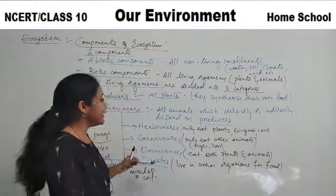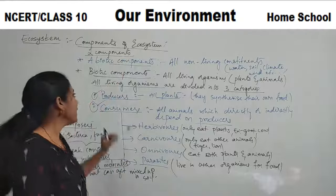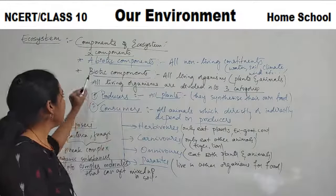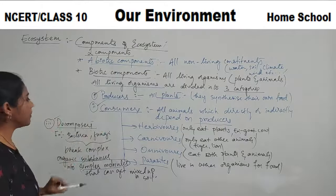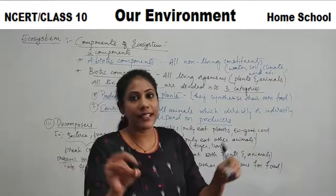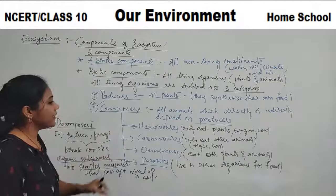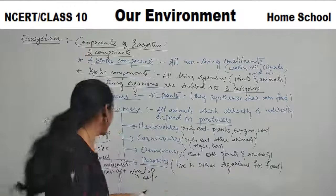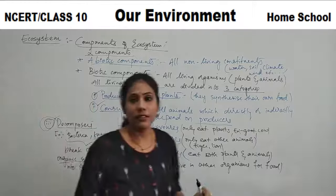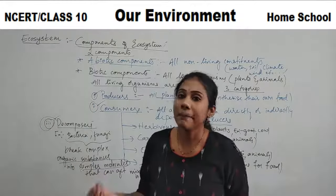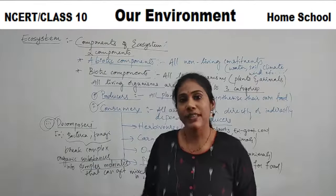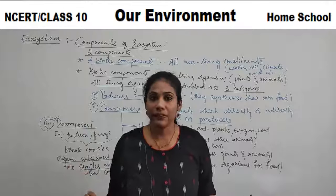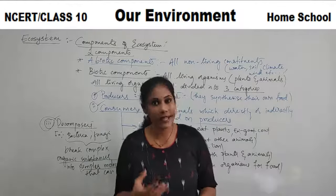To summarize: ecosystem has two components — abiotic and biotic. Abiotic means all non-living constituents. Biotic has three types: producers, consumers, and decomposers. Producers are all plant varieties that synthesize their own food. Consumers directly or indirectly depend on producers and include herbivores, carnivores, omnivores, and parasites. Decomposers help in the decomposition of animals and plants after their death. In the next video, we will study food chain and food web. Thank you so much.